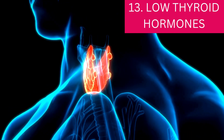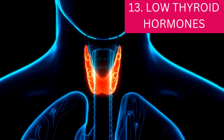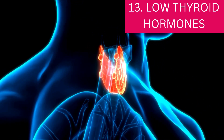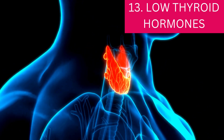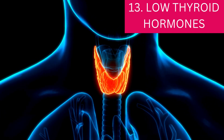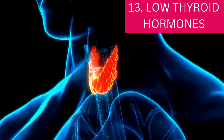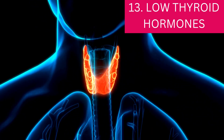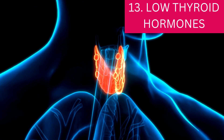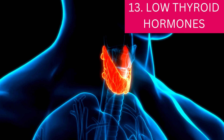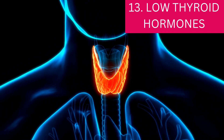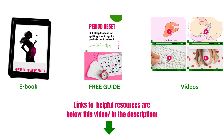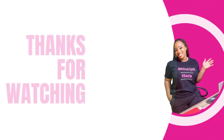And the last point is low thyroid hormones. Your thyroid gland is located in your neck area and produces hormones very necessary for ovulation. Low thyroid levels prevent ovulation by increasing prolactin — and you remember how high prolactin means no ovulation. So that's it — 13 causes of anovulation. Don't forget to get your Period Reset Guide and other helpful resources from the link in the description. See you next week!